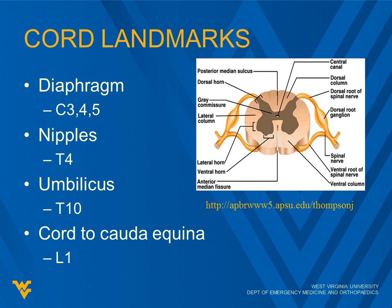Some landmarks we need to know: the diaphragm is controlled by C3, 4, and 5. We typically say C3, 4, and 5 keep the diaphragm alive. Nipples are at T4, and the umbilicus is at T10. The cord changes to cauda equina at about L1 or so — it looks like a horse's tail there. That's a good mark to know for lumbar punctures; you don't really want to go any higher than that.